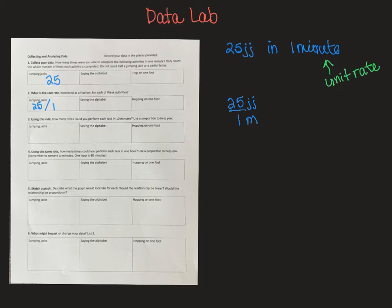Number three says, if you can do 25 jumping jacks in one minute, how many can you do in 10 minutes? And it says use a proportion. Remember, in sixth grade, you learned that a proportion was two equal ratios. So, I have one ratio here and now I'm making a new ratio and that new ratio is to 10 minutes.